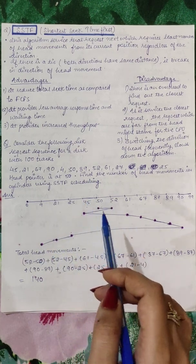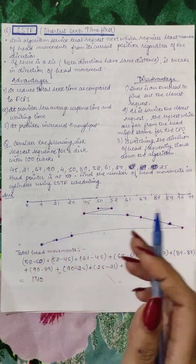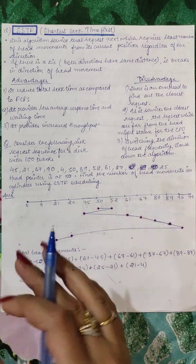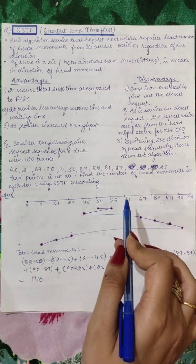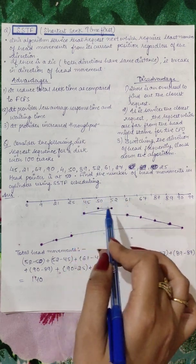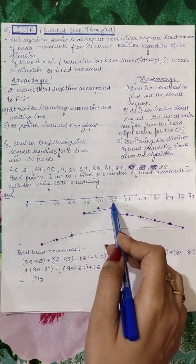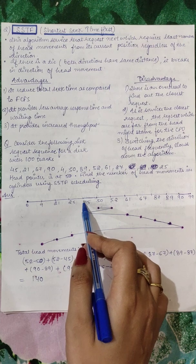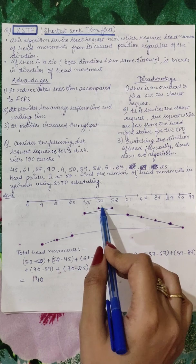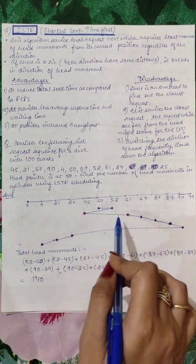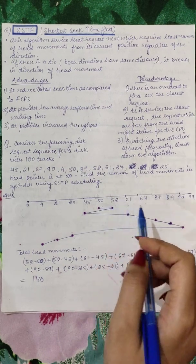So in the concept of SSTF, you will have to find out what the closest request is and take the movement of head there, regardless of what direction it is. We will consider the direction if we have both requests where the distance, the seek time, will be the same. That means if the head is at 50 and requests are equidistant on both sides, then we will be choosing the direction of head movements. If the head movement direction is going towards the right, then select that movement. Okay? So thank you.